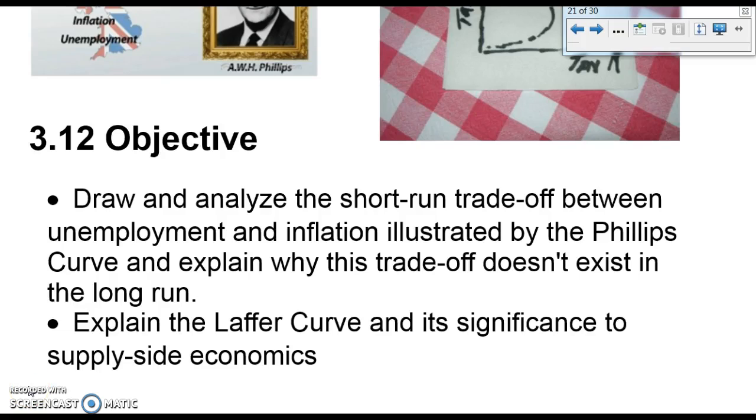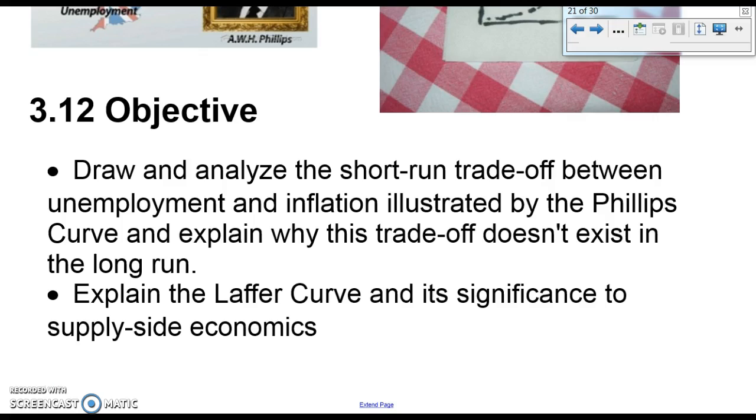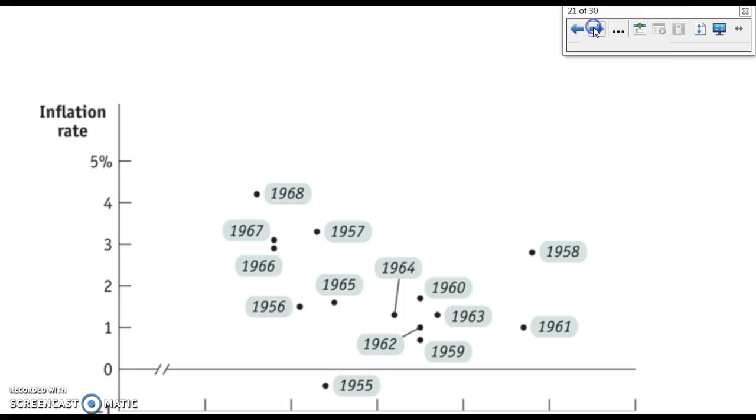3.12 is the last part of today's lesson and the last part of this unit. In 3.12, you're going to learn about the short-run trade-off between unemployment and inflation and how that is illustrated by the Phillips curve, and also a little bit about the long-run Phillips curve and why the trade-off doesn't exist then. And then very briefly, we'll talk about the Laffer curve and the role it plays in supply-side economics.